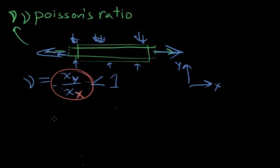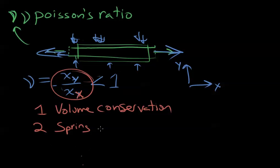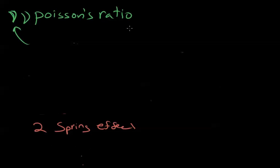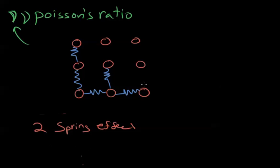The next thing I want to talk about is the other reason why Poisson's ratio exists. I mentioned one is volume conservation, and the second one is the spring effect. If we draw the microscopic picture, a simplified microscopic picture of the material system, we see atoms connected through bonds. We'll draw them as springs.